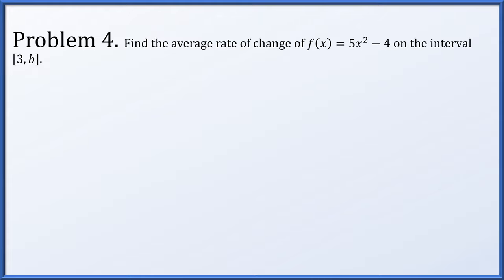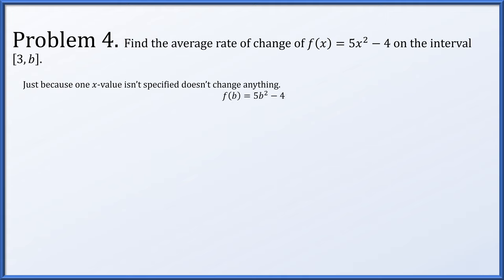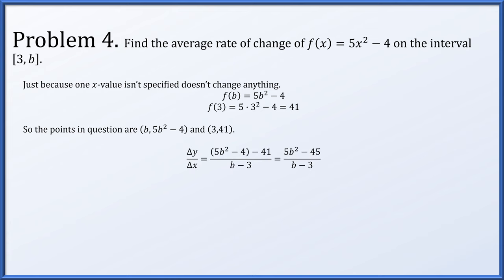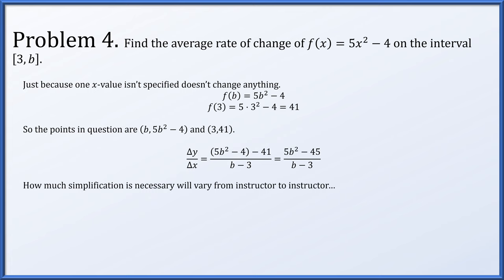In problem four, we find the average rate of change of f(x) = 5x² - 4 on the interval from 3 to b. The x value of b isn't specified, but that doesn't change anything. f(b) is simply 5b² - 4, and f(3) works out to be 41. The points are (b, 5b² - 4) and (3, 41). Computing delta y over delta x gives (5b² - 45) over (b - 3). In theory we might be done, but there is simplification to be done.